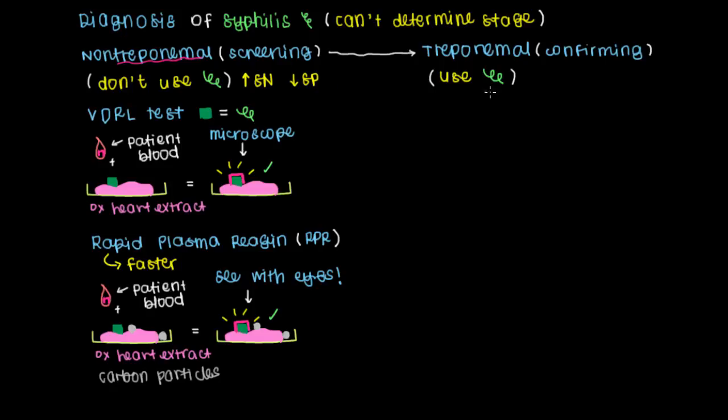We do that by directly using the treponeme protein. The first test I'll mention is the treponema pallidum, or just the name for the syphilis bacterium, the treponema pallidum hemagglutination assay, or we can abbreviate this mouthful as a TPHA test.